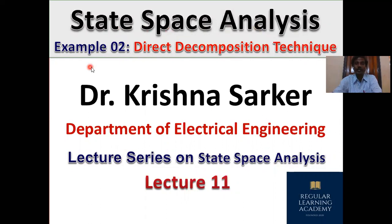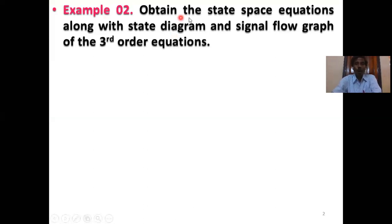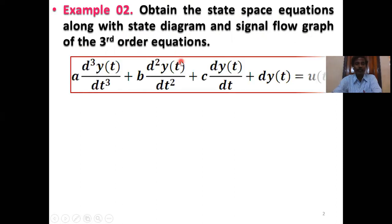Our topic is State Space Analysis Example 2. The example is to obtain the state space equations along with state diagram and signal flow graph of the third order differential equation: A·d³Y(t)/dt³ + B·d²Y(t)/dt² + C·dY(t)/dt + D·Y(t) = U(t), where U(t) equals the reference input.